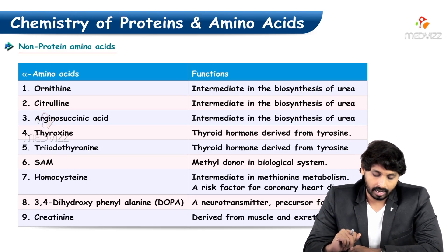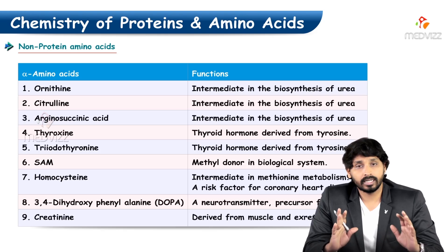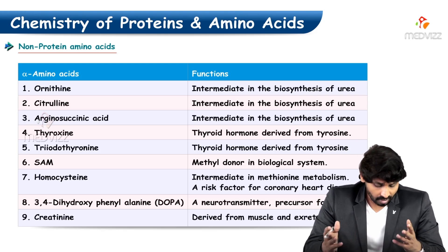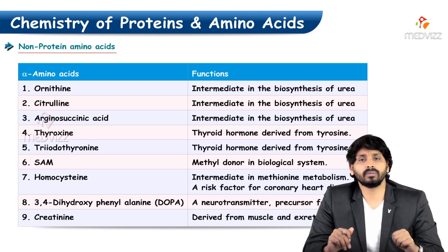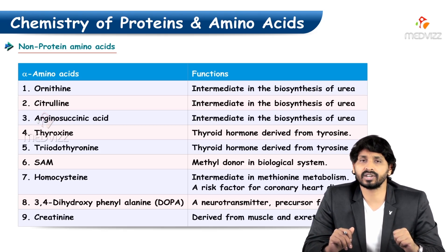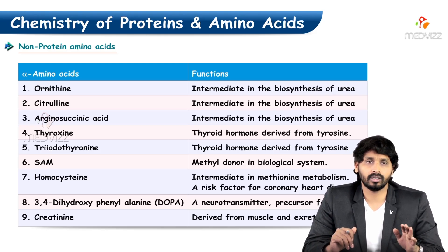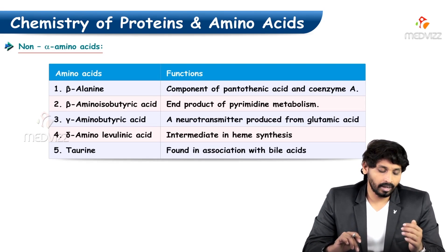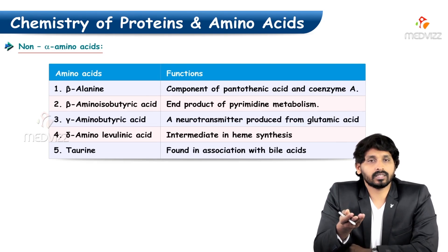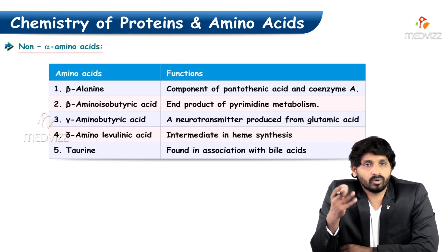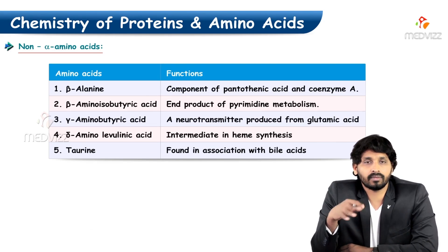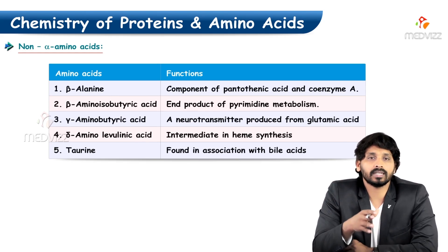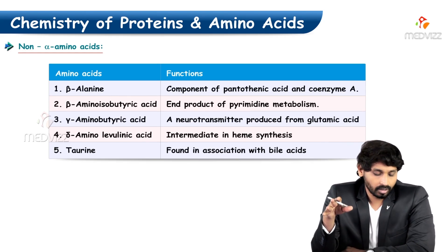3,4-Dihydroxyphenylalanine (DOPA) is a neurotransmitter and precursor of melanin, a skin pigment. Creatinine is derived from skeletal muscles and excreted in urine. All these are non-protein amino acids. Non-alpha amino acids also exist — in biology we require only alpha amino acids, but there are a few amino acids which are not alpha in nature.